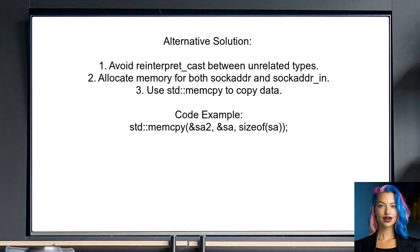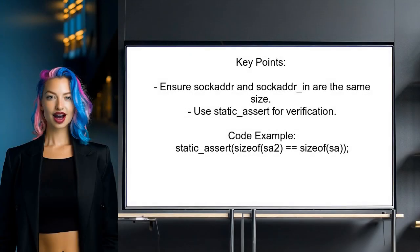Another user clarifies that using reinterpret_cast between sockaddr and sockaddr_in is not safe. They explain that these types are unrelated, which can lead to incorrect assumptions about memory allocation. Instead, they recommend allocating memory for both types and using std::memcpy to safely copy the data. They emphasize ensuring both objects are the same size, suggesting a static_assert to verify this. While std::memcpy may not always be free, it is often efficient.